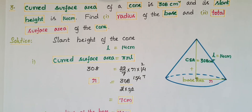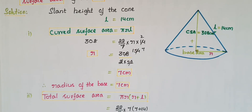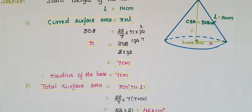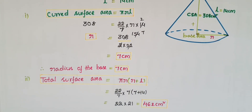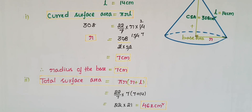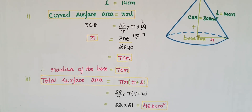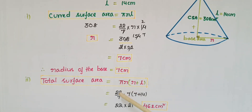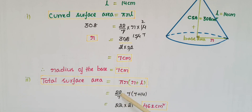Now we find the total surface area of the cone, which equals π r (r + l). That is 22/7 × 7 × (7 + 14). The 7s cancel, giving 22 × 21 = 462 centimeter square. So the total surface area of the cone is 462 cm².